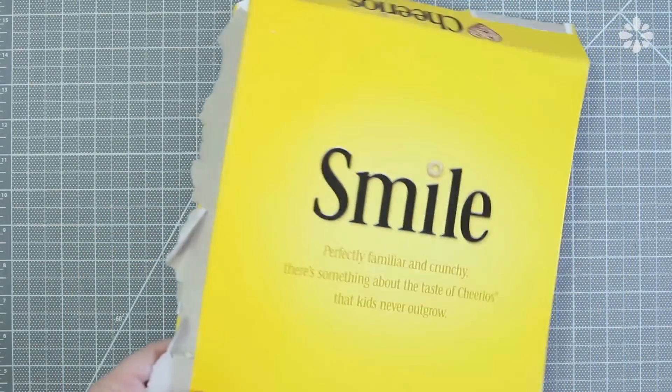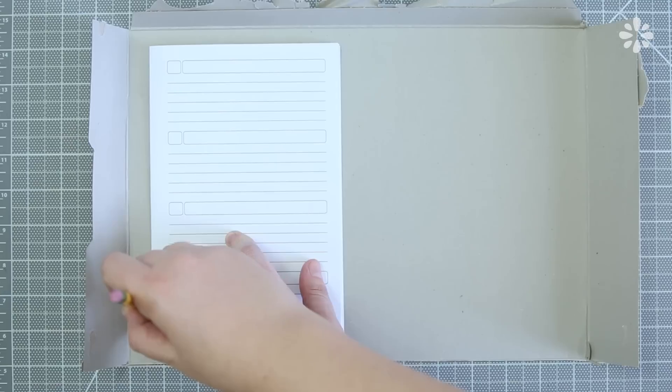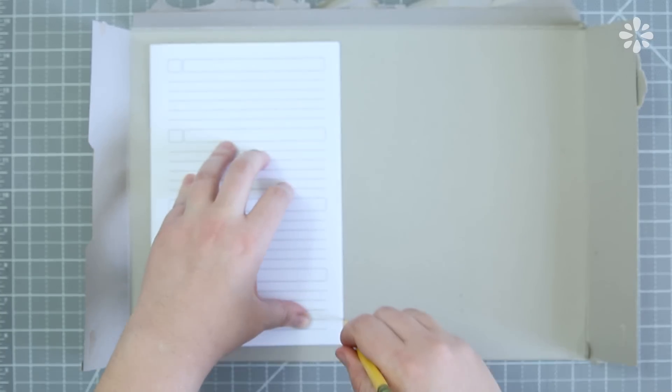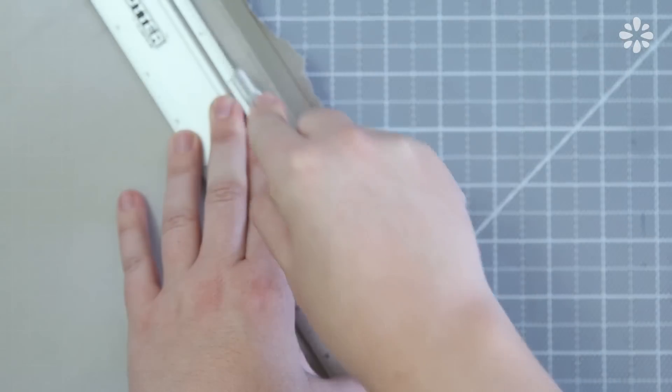Now for the cover, since we're talking about being on a budget, I'm just using a cereal box. You can do this with other cardboard packaging as well. To measure out the size of the cover, just take one signature and trace it. Make two of these for the front and back cover. Then trim them out.